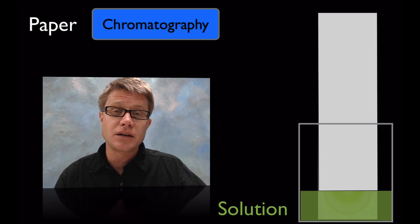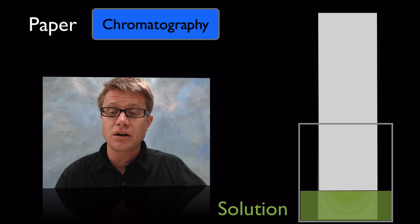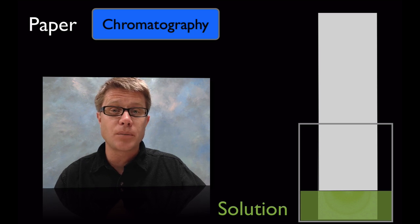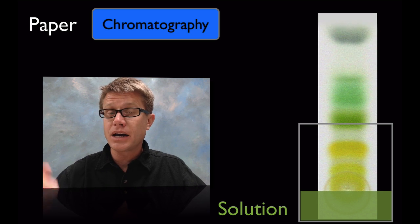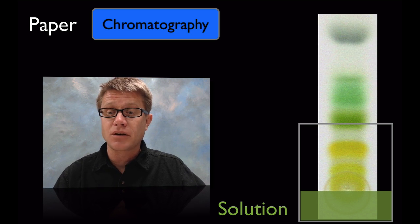And so what we'll do is put that in some kind of a solution. We'll generally dissolve it in some kind of an alcohol, and then we just have paper. And we'll put the paper inside that solution. And what happens over time is it's going to migrate up. We're going to have a front that migrates up.